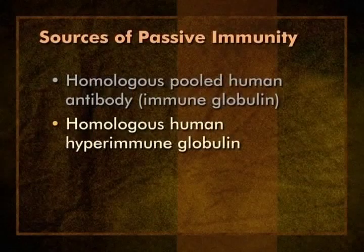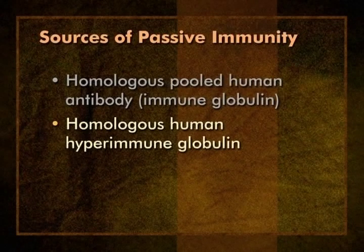Immune globulin is used for hepatitis A and measles post-exposure prophylaxis, among other indications. Immune globulin derived from American donors will contain antibodies to these viruses. In contrast, immune globulin from the U.S. would have little or no antibody to yellow fever, since relatively few North Americans are exposed to this disease or vaccinated against it. A second antibody product is homologous human hyperimmune globulin. These products have a high concentration of antibody to a specific disease. For instance, hepatitis B immune globulin, HBIG, used for post-exposure prophylaxis, is taken from donors with high levels of hepatitis B antibody. HBIG will contain a large amount of hepatitis B antibody, but also smaller amounts of antibodies to other antigens, like measles and hepatitis A.